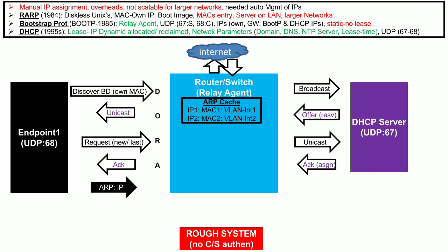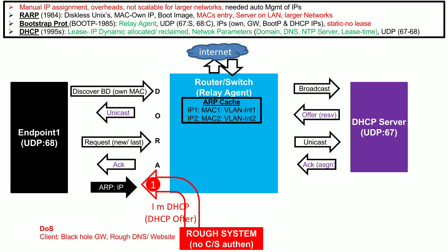Here is the problem: since the DHCP process has no authentication mechanism, any rogue system can connect through the switch and send a DHCP Offer in response to a DHCP broadcast Discover request by the client. This can cause certain attacks — for example, it can direct the client to a black hole where no traffic exists, or redirect the client to a rogue DNS server which can then redirect it to a rogue website.